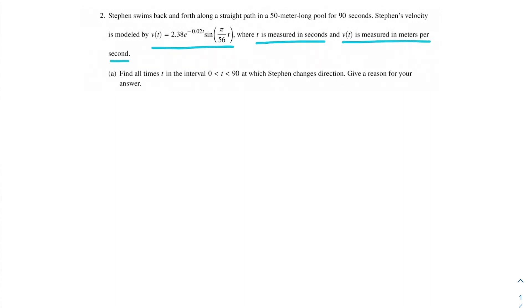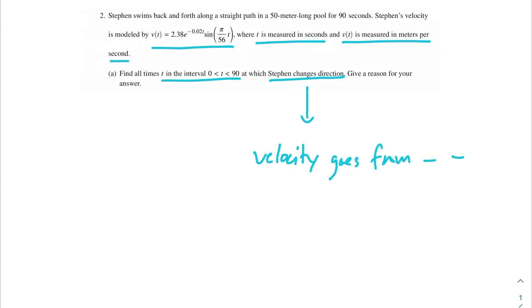Part A says find all the times t in the interval 0 to 90 at which Stephen changes direction, then give a reason for your answer. We're being asked all the times that Stephen changes direction and we're being given his velocity. When you think velocity and direction, you'll be changing direction when your velocity goes from negative to positive or from positive to negative.